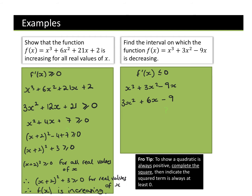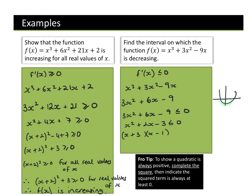We need to find the interval for where 3x² + 6x − 9 ≤ 0. We can divide everything by 3: x² + 2x − 3 ≤ 0. Factorising: (x + 3)(x − 1) ≤ 0, giving x = −3 and x = 1. Because our function is less than or equal to zero, x is going to be −3 ≤ x ≤ 1.